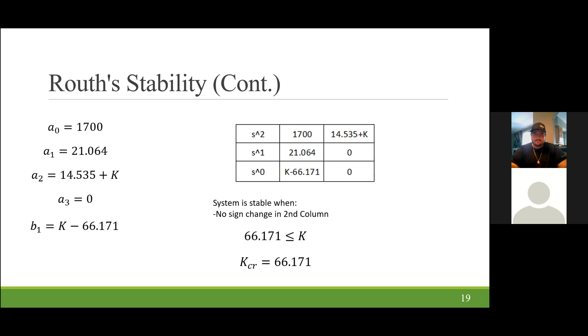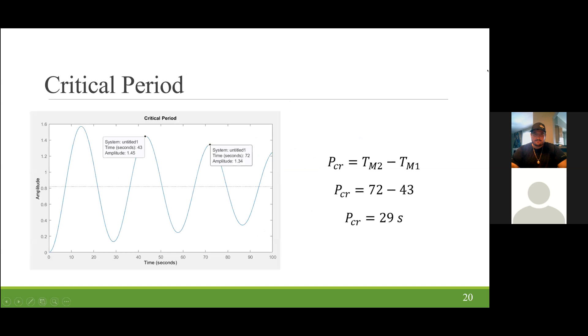The idea behind Routh stability array is that it can be determined the system is stable whenever every value in the second column doesn't experience a sign change, so they all have the same sign. Our system will remain stable as long as our gain is greater than 66.171 or equal to. At 66.171, it is 0, which will give us a neutral stability. Our neutral stability equals our critical gain, which is 66.171.